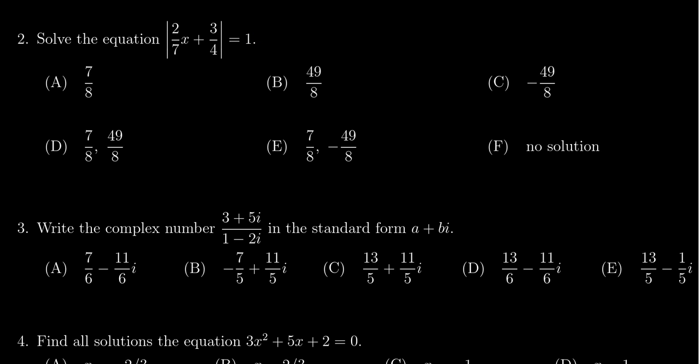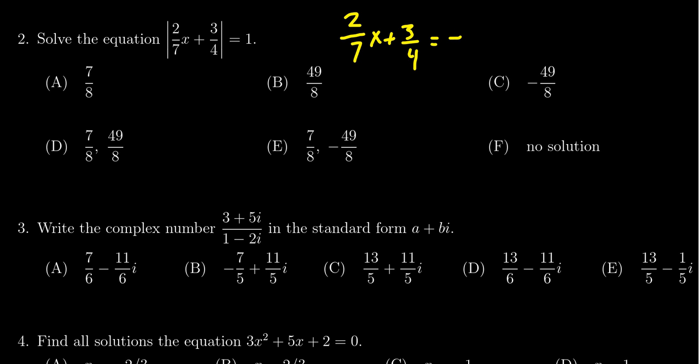In this situation, we just have absolute value equal to a positive one. So to remove the absolute value, we have to consider both the positive and negative case. So we get 2/7x plus 3/4 is equal to plus or minus one.